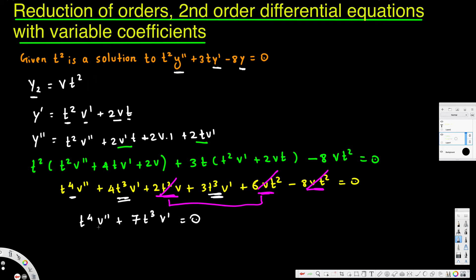To bring this into standard form, we divide everything by t to the 4th — the leading coefficient. This gives v double prime plus 7 over t times v prime equals zero.